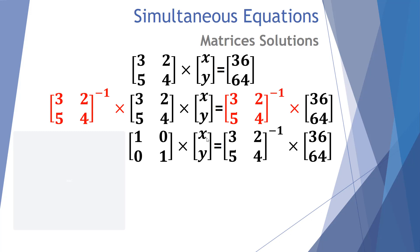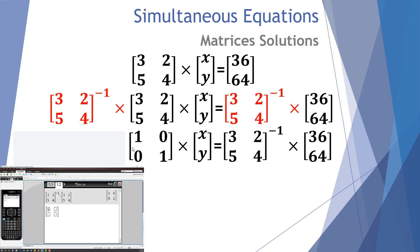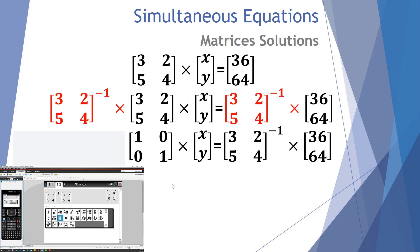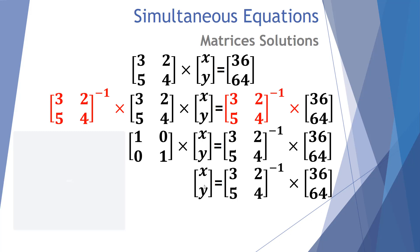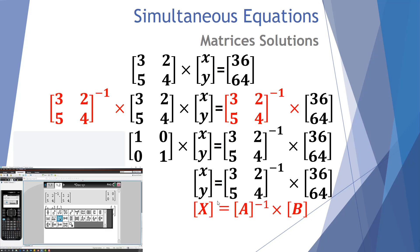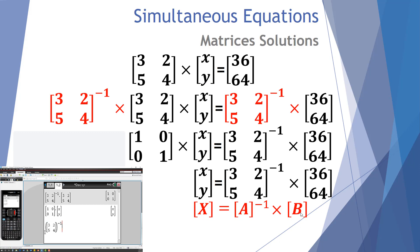When we multiply the unknown matrix by the identity matrix, it returns itself — effectively it's like multiplying by 1. So we're left with: the unknown matrix equals the inverse of A multiplied by the total matrix. That fits the pattern we had earlier. We're trying to find X the unknown matrix, and we know A and B, so we rearrange: X equals the inverse of A times B. That's the process of how we get to this point.